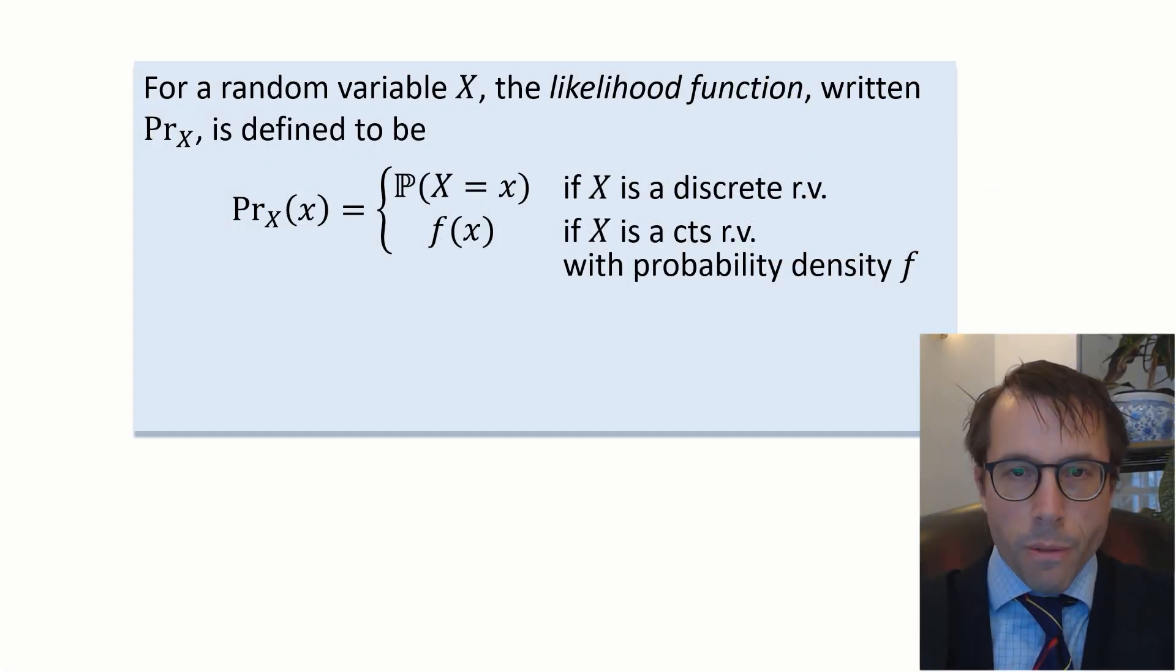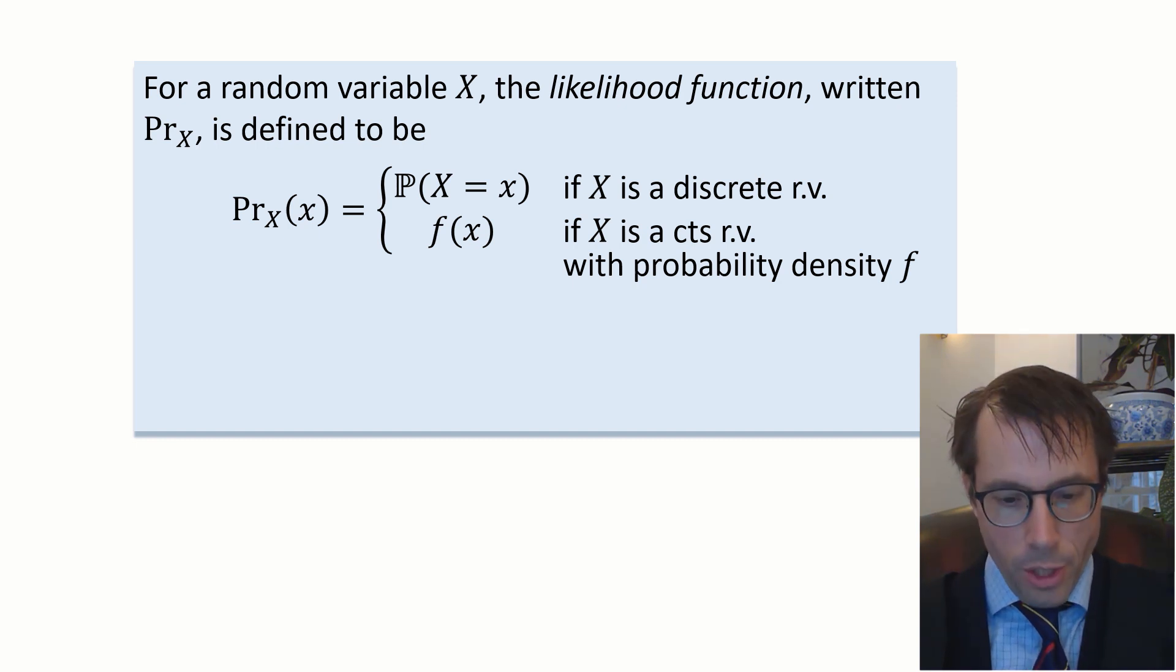This is the better notation. For a random variable X, we define the likelihood function PR subscript capital X to be either the probability mass function or the probability density function, depending on whether the random variable is discrete or continuous. It's written PR subscript capital X, open brackets, lowercase x. And when I say it aloud, I'll say the likelihood for big X of little x.